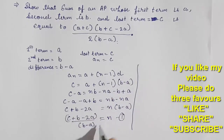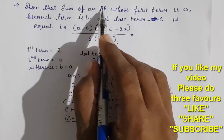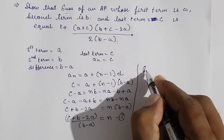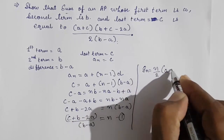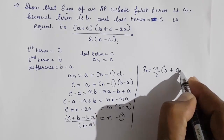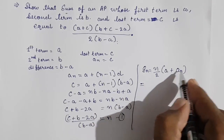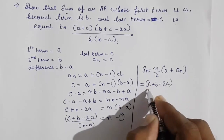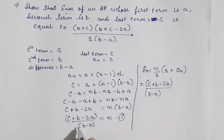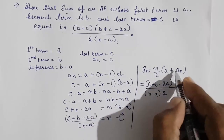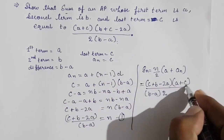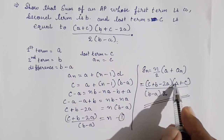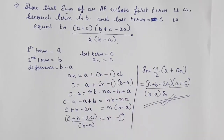Now we have found n. We want to prove the sum of the AP. So Sₙ = n/2 into (a + l), where l is the last term, which is c. Substituting n from result one: Sₙ = (b + c - 2a)/(b - a) divided by 2, into (a + c). This simplifies to (a + c)(b + c - 2a) upon 2(b - a), which is our required answer.